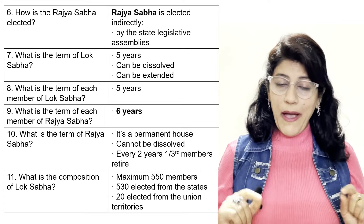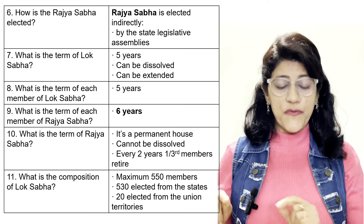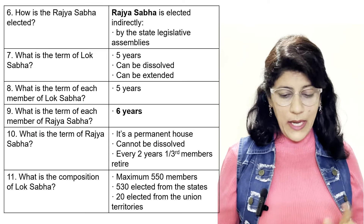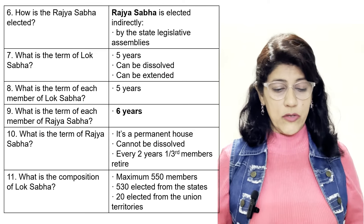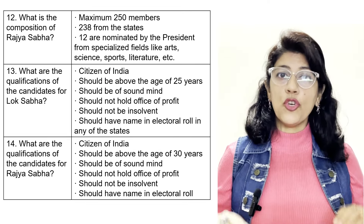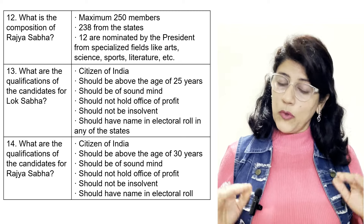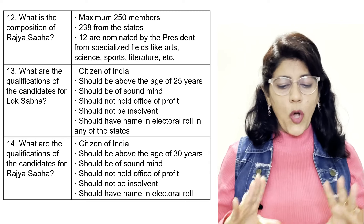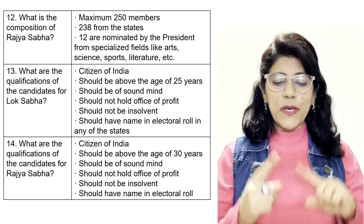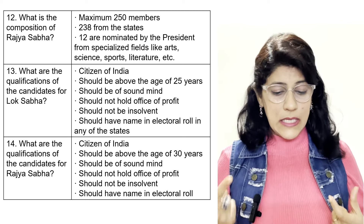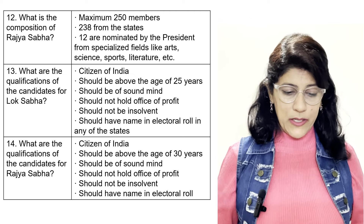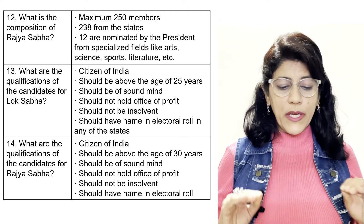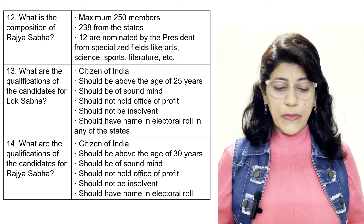What is the composition of Lok Sabha? Maximum 550 members — 530 elected from the states and 20 elected from the union territories. What is the composition of Rajya Sabha? Maximum 250 members — 238 from the states and 12 are nominated by the president from specialized fields like arts, science, sports, literature, etc.